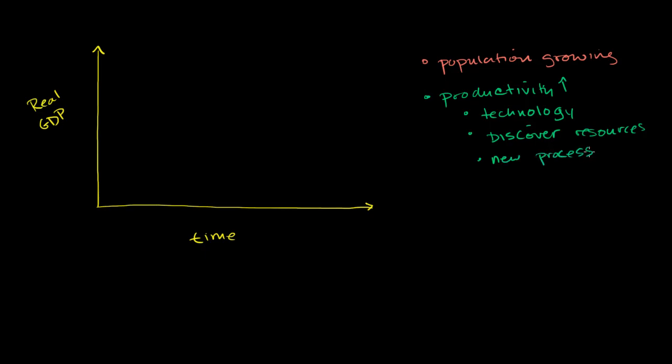So on a per person basis, they're able to produce more and more over time. So because of these trends, and these are trends that do take place over long periods of time in many economies, you would expect the real productivity of that economy to increase. So if you were just to do the long-term trend just based on these two things, the population growing and productivity improving, over time, real GDP should have a trend something like that.